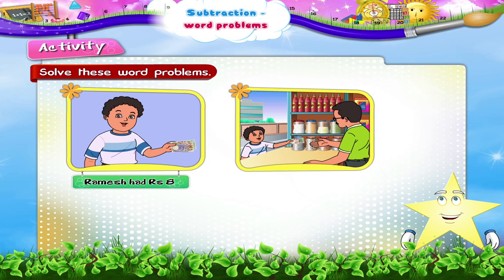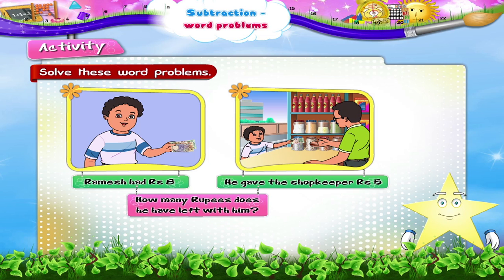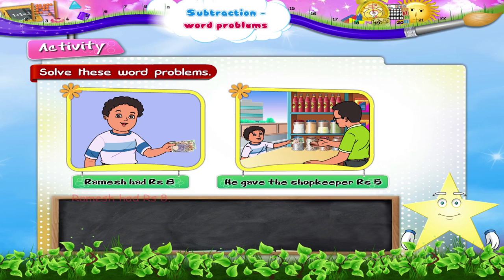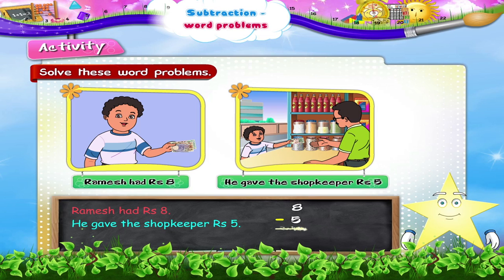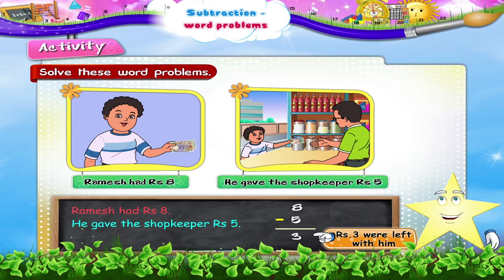Ramesh had rupees eight. He gave the shopkeeper rupees five. How many rupees does he have left? Ramesh had rupees eight, he gave the shopkeeper rupees five, so he has eight minus five — that's three rupees left with him. You have now learnt how to solve word problems in subtraction.